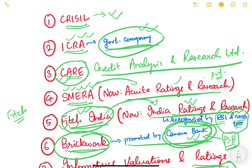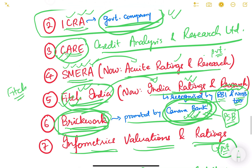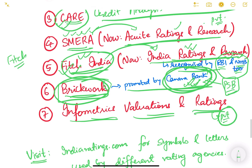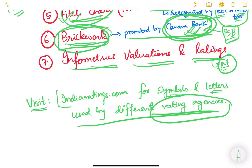To summarize: only ICRA is a purely government company, and Brickwork can also be considered government-affiliated since it is promoted by Canara Bank. The rest are private companies. All seven are currently operating in Indian markets. If you are interested in the actual symbols and letters used by different credit rating agencies, you can visit indiaratings.com — though it's not important for exams. We will continue with debt securities in the next video.